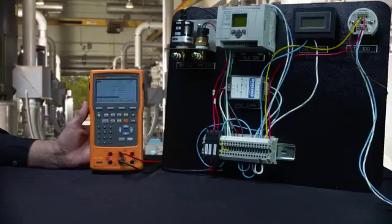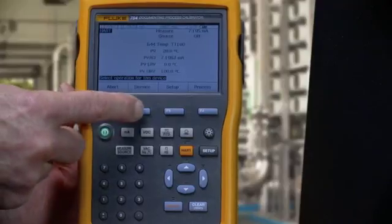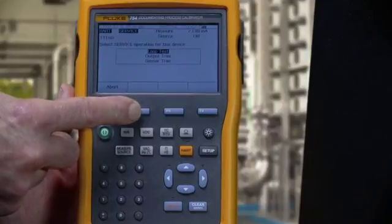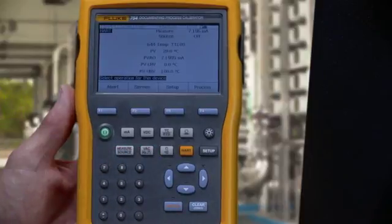Need more HART capability in your calibrator? Consider the Fluke 754 Documenting HART Calibrator that adds HART sensor trim, extensive source and measurement functionality, and calibration documentation capabilities to the functions included in the 709H.